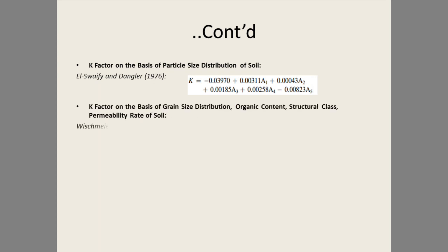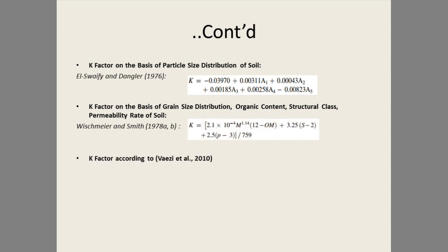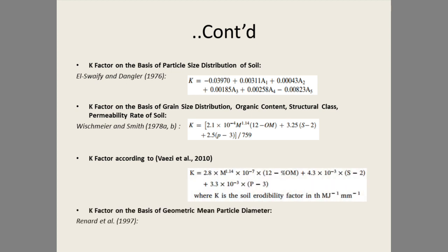There are many K factor equations. K factor based on particle size distributions of soil: Elfert, Schwab and Dangler (1976) developed one equation. Another is K factor based on grain size distribution, organic content, structural classes, and permeability rate, developed by Wischmeier and Smith (1978). Another is by Vaze (2010), and another based on geometric mean particle diameter by Renard (1997).